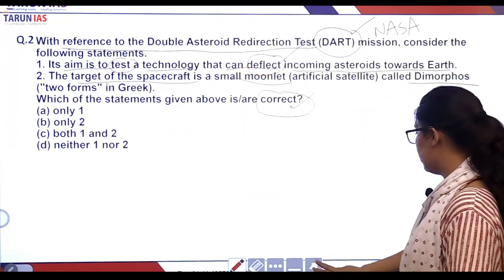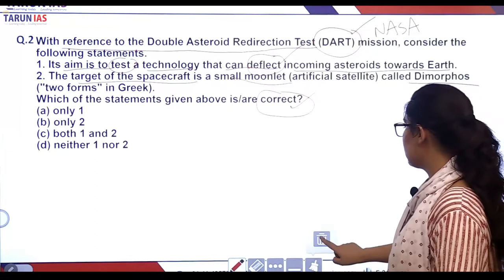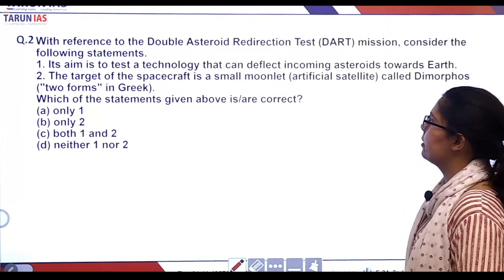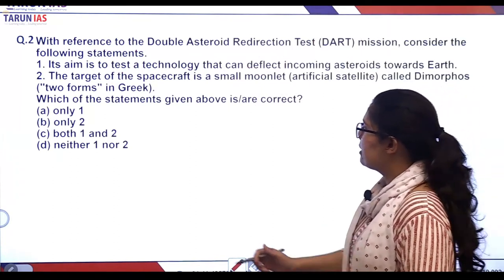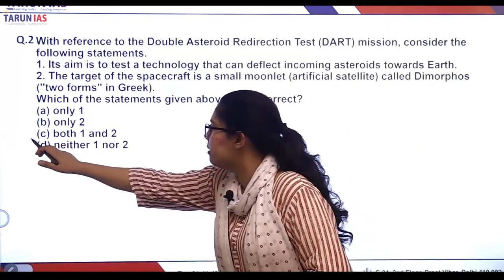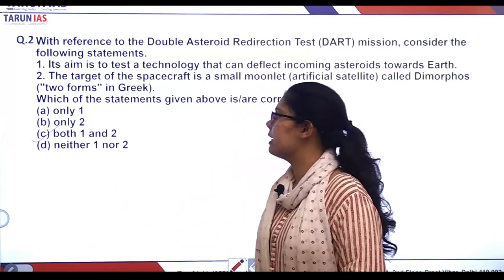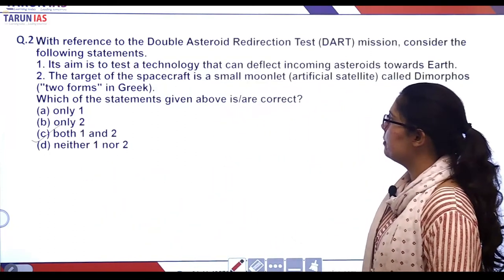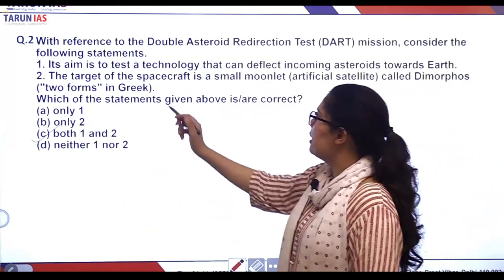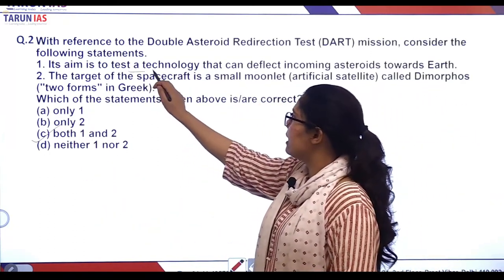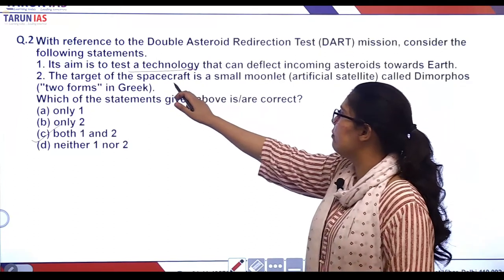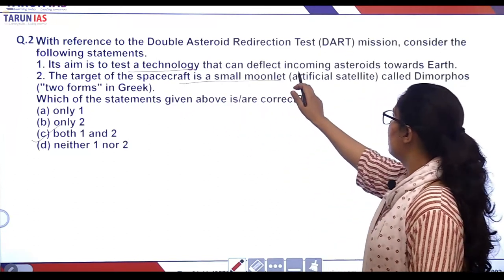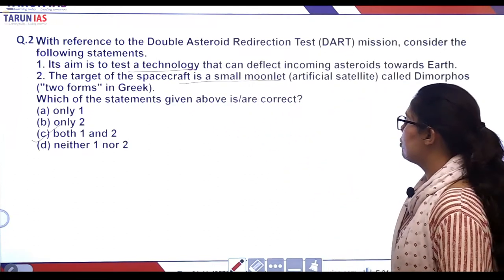Always mark the keyword — whether it is correct or incorrect. Both statements are correct here, so C will be our answer. It is going to test a technology to deflect an incoming asteroid.